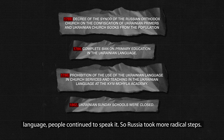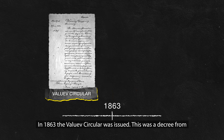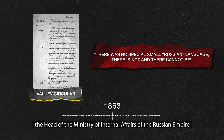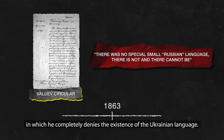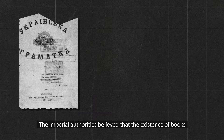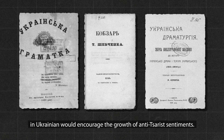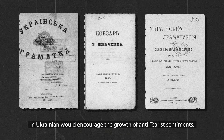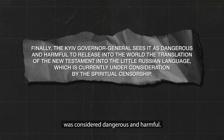So Russia took more radical steps. In 1863, the Valuiv Circular was issued — a decree from the head of the Ministry of Internal Affairs of the Russian Empire, in which he completely denied the existence of the Ukrainian language. The imperial authorities believed that books in Ukrainian would encourage the growth of anti-Tsarist sentiments, and even the translation of the New Testament into Ukrainian was considered dangerous and harmful.